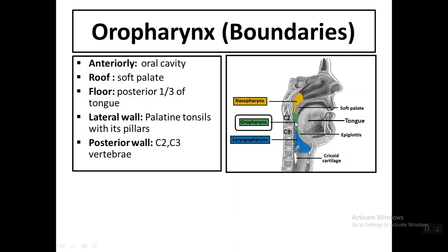To summarize the oropharynx: anteriorly it opens into the oral cavity, superiorly is bounded by the soft palate, the floor is the posterior one-third of the tongue, the lateral wall has the palatine tonsils with pillars, and the posterior wall is related to the second and third cervical vertebrae.